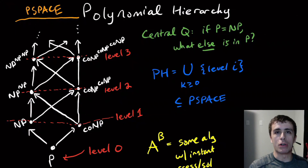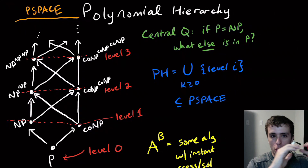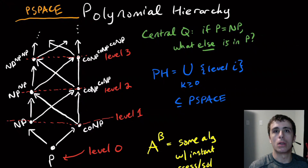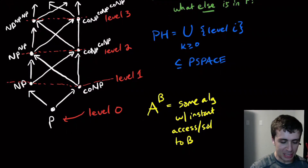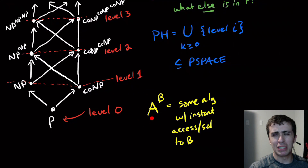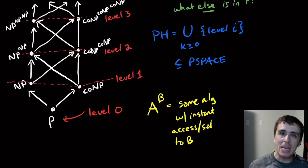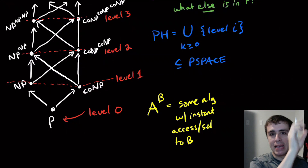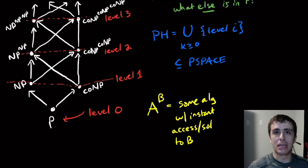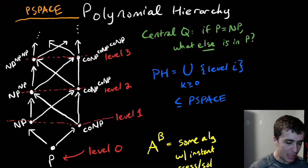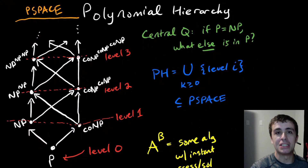One thing you can pretty easily show is that all of these are a subset of PSPACE. If you have a polynomial space algorithm and you had instant access to another polynomial space algorithm, then you can solve all of those without an oracle in polynomial space. If problem A runs in n^k time and B runs in n^l time, then simulating without an oracle takes n^(kl) space in the exponent, which is still polynomial.